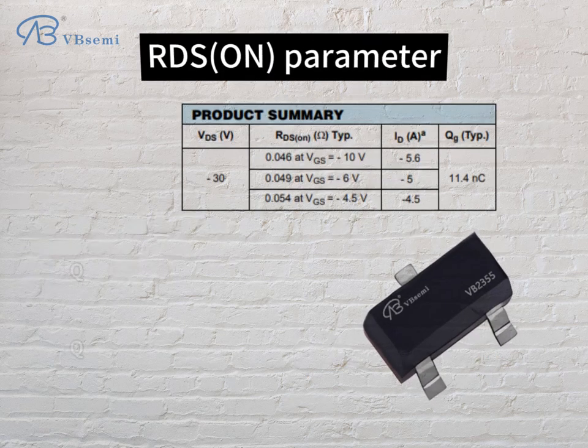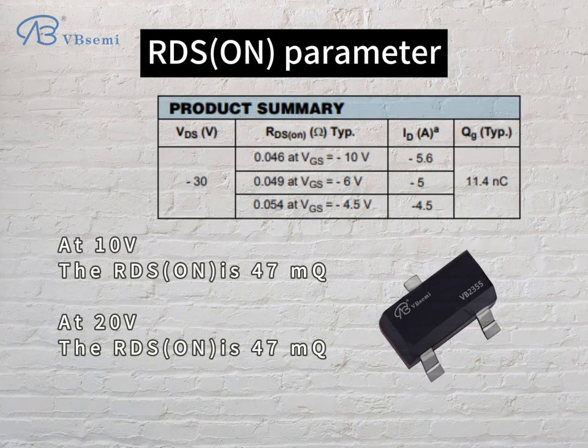RDS(on) parameters: at 10V, the RDS(on) is 47mΩ; at 20V, the RDS(on) is also 47mΩ.